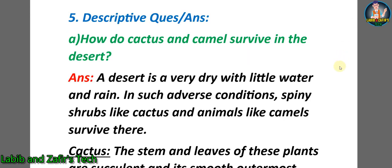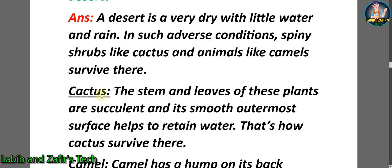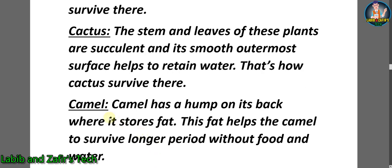Now let's go through some descriptive question answers. Question A: how do cactus and camel survive in the desert? Answer: a desert is a very dry place with little water and rain. In such adverse conditions, spiny plants like cactus and animals like camels survive there. Cactus: the stem and leaves are succulent, and its smooth outermost surface helps to retain water. Camel: the camel has a hump on its back where it stores fat. This fat helps the camel to survive for longer periods without food and water.